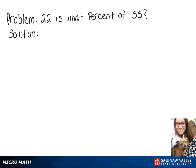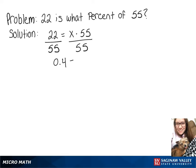In this video we have the problem: 22 is what percent of 55? We set our equation up as 22 equals x times 55. Then to solve for x we divide both sides by 55, giving us an x value of 0.4. To turn that into a percent we multiply by 100, giving us 40%.